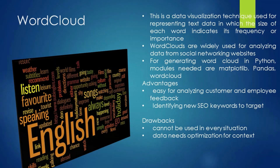Word Cloud is a data visualization technique used for representing text data in which the size of each word indicates its frequency or importance. Word Clouds are widely used for analyzing data from social networking websites. For generating Word Cloud in Python, the modules needed are Matplotlib, Pandas, and Word Cloud. Advantages: it is very easy for analyzing customer and employee feedback, and it helps in identifying new SEO keywords. Drawbacks: it cannot be used in every situation and data needs optimization for context.